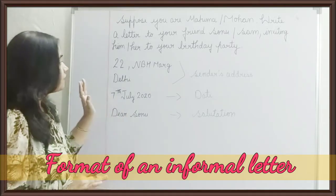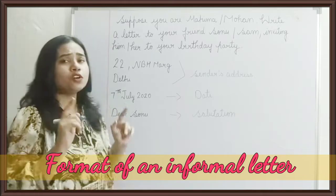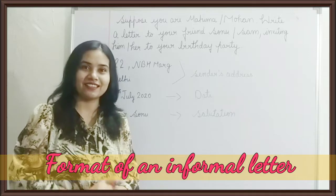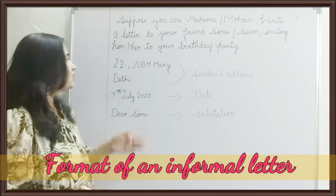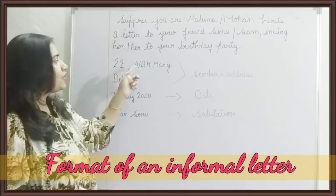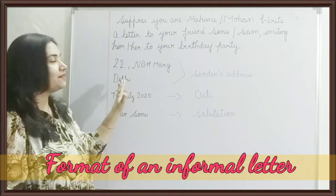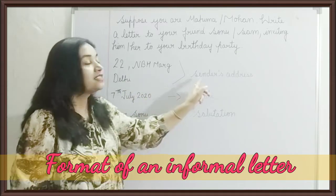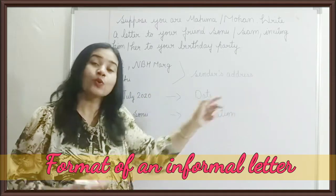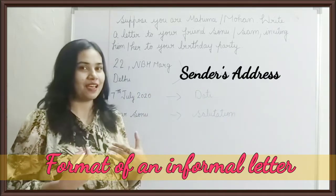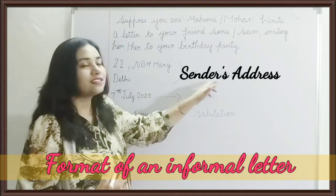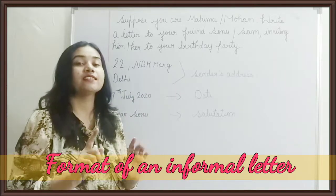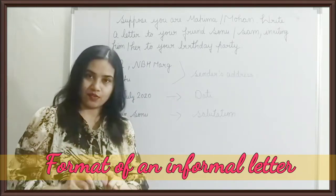First of all, what you have to write? You have to write your address. So, '22 NBH Mark Delhi' — I have written this address. This is called the sender's address — who is sending the letter? So that's why the sender's address should come first. Then, after writing the sender's address, you have to leave one line.